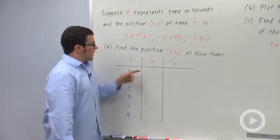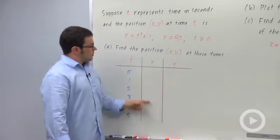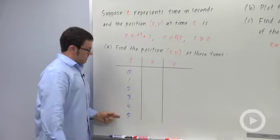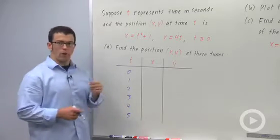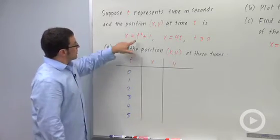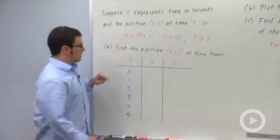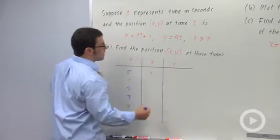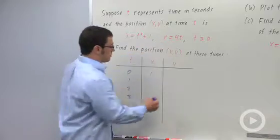Now let's start by plotting out a few points, x and y, for each of these values of time t, just to see where the particle is. Now first, when t equals 0, I get x equals 0 squared plus 1, x equals 1, and y equals 4 times 0, which is 0.